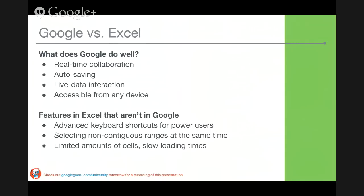Autosaving is definitely something we take for granted if we've been on Google Spreadsheets for a while. You don't really think about having to save your file over and over again to make sure you don't lose sensitive data. For those who have just made the switch, that's something you're really going to love. There's also live data interaction with Google Spreadsheets — since spreadsheets are web-based, there are cool functions and tools that can bring in live data from the internet. Google Spreadsheets are also accessible from any device, and there are plenty of offline capabilities which are really easy to set up.